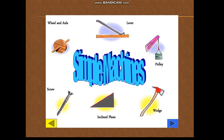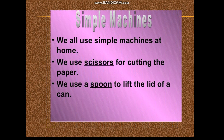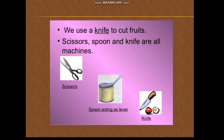Moving on to simple machines — when a task is difficult to do with our hands, we use tools called machines. A simple machine is a tool that makes our task easier and faster with the use of less force. We all use simple machines at home: we use scissors for cutting paper, we use a spoon to lift the lid of a can, we use a knife to cut fruits. Scissors, spoon, and a knife are all simple machines.